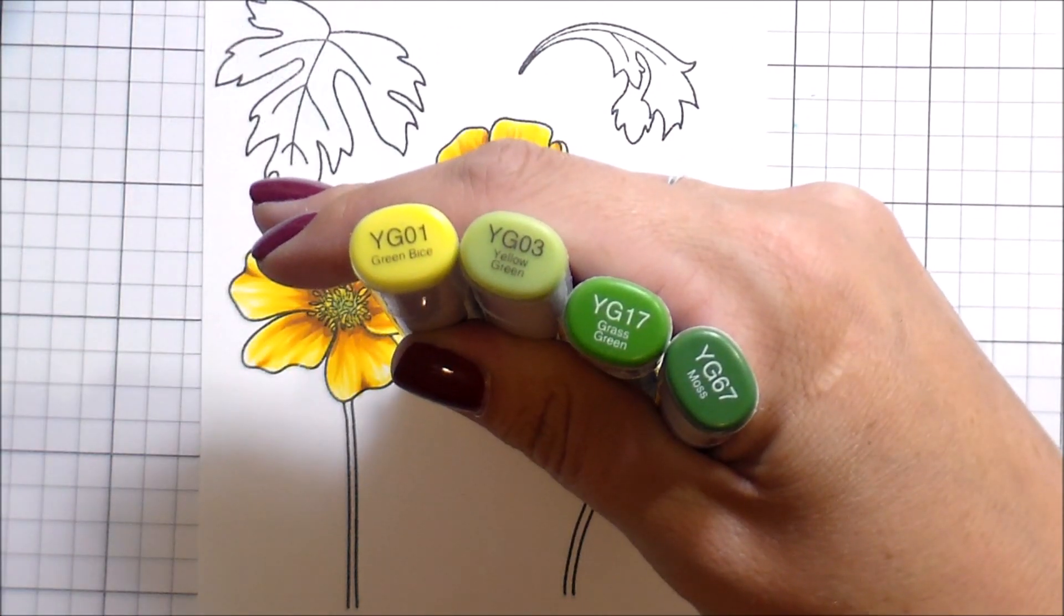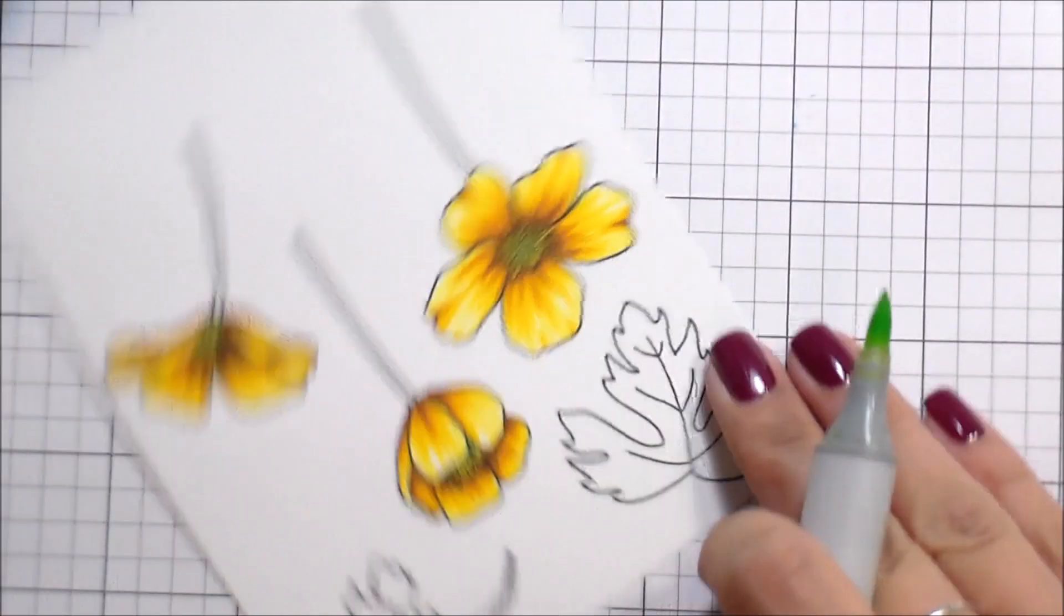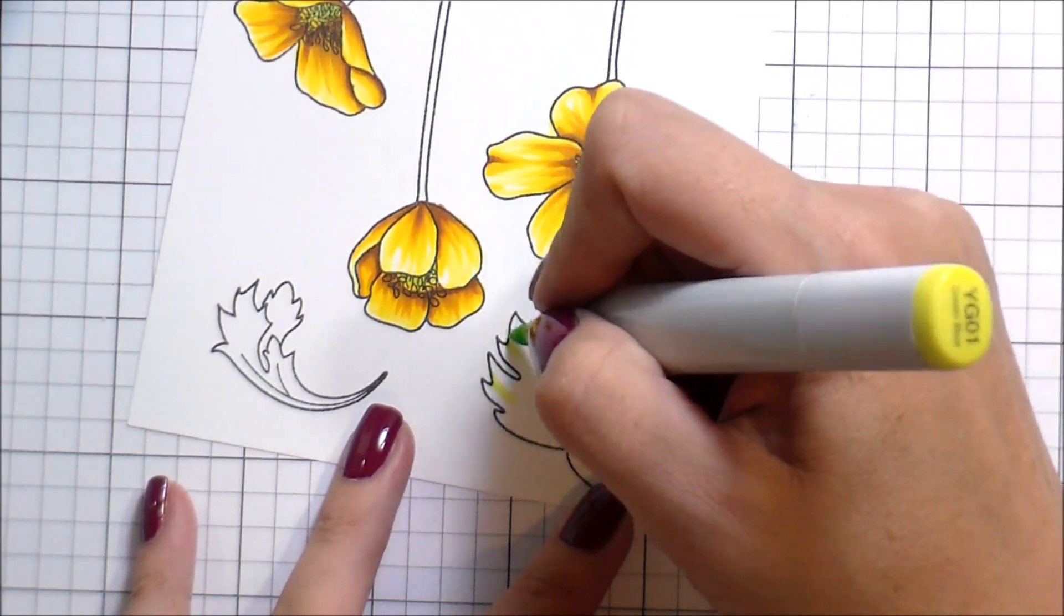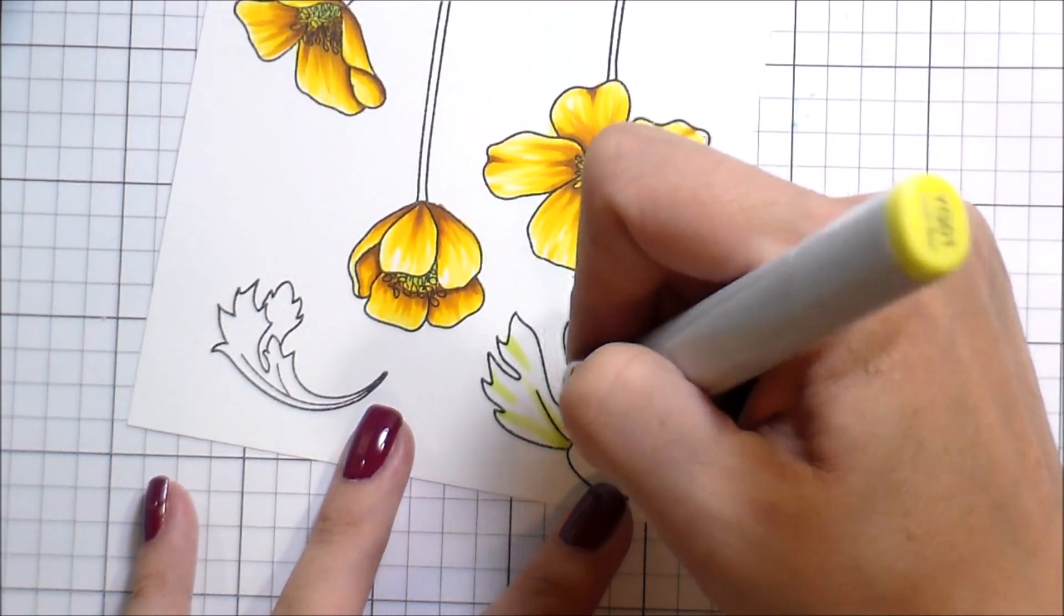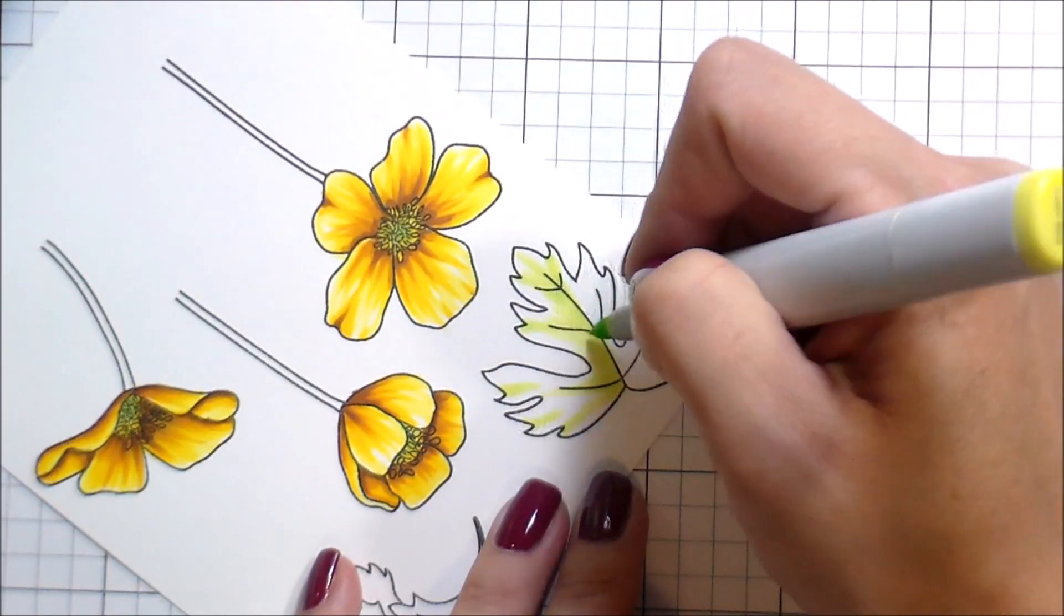I just wanted to give you an idea - I know sometimes it can be difficult to see where the shading would go. This is only if you're doing the coloring as if your light source is in the top right hand corner. I went ahead and colored those and now we're moving on to the leaves. The same premise is going to apply for the leaves.